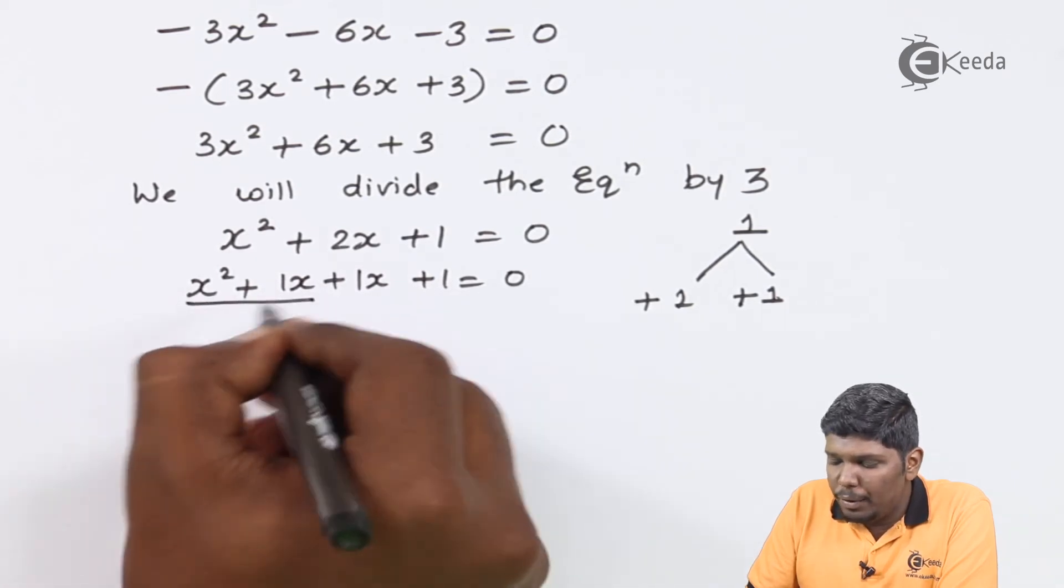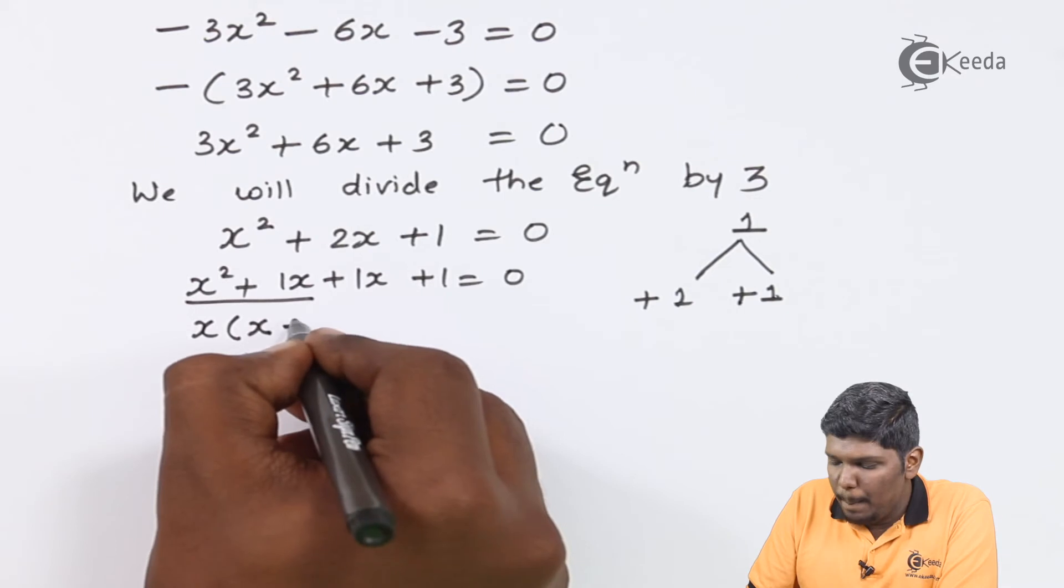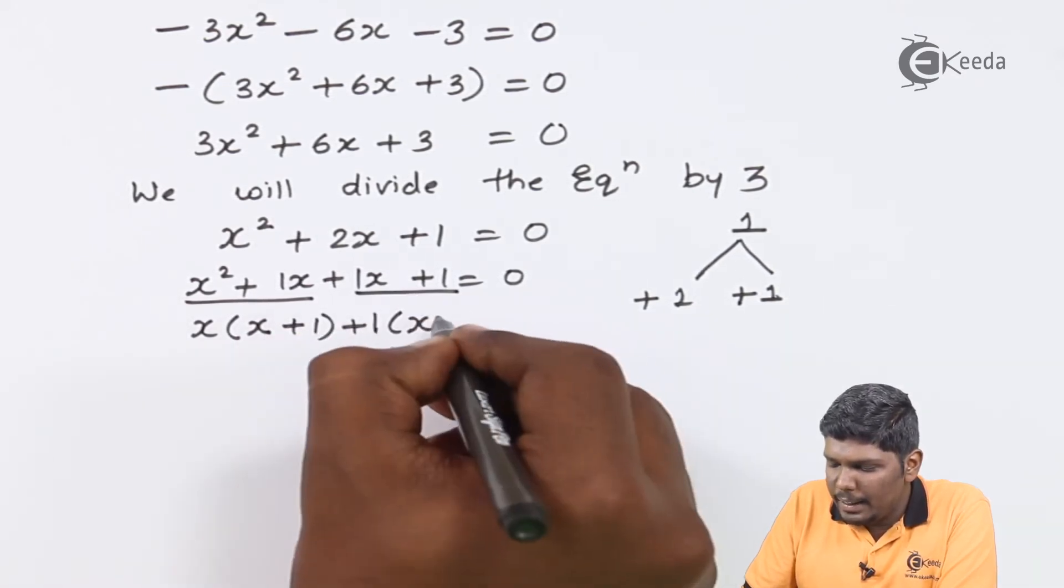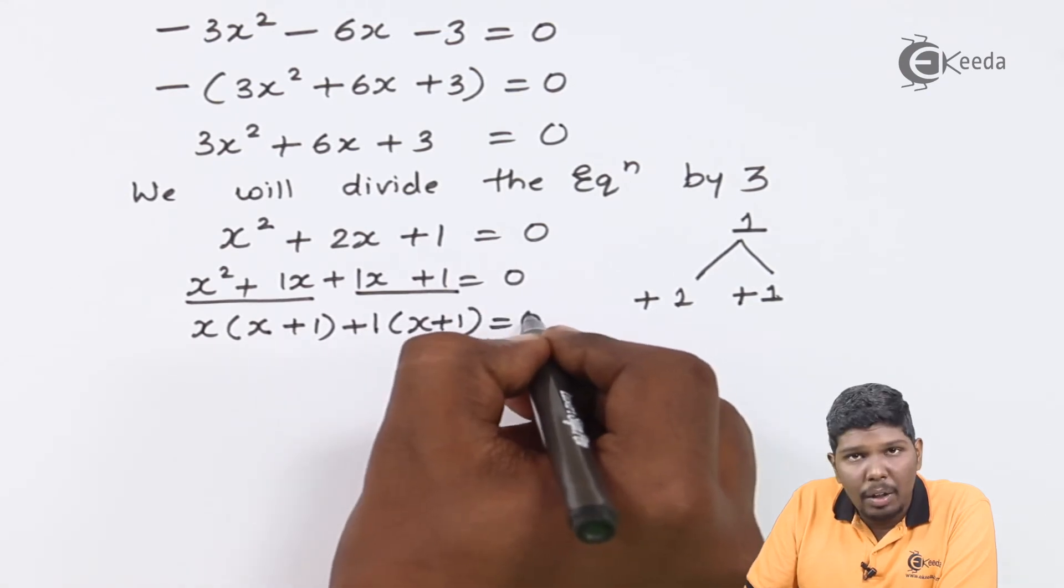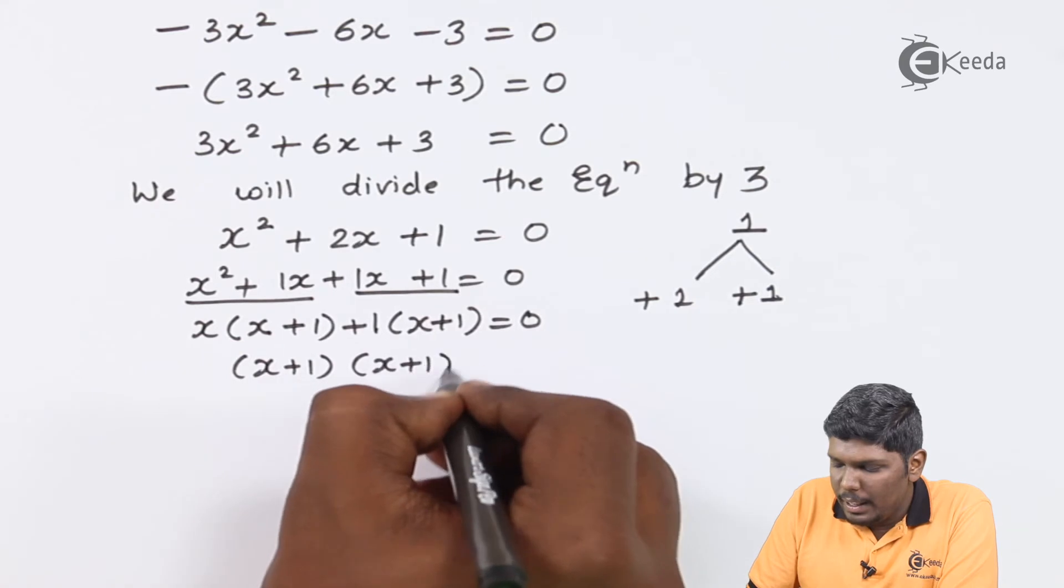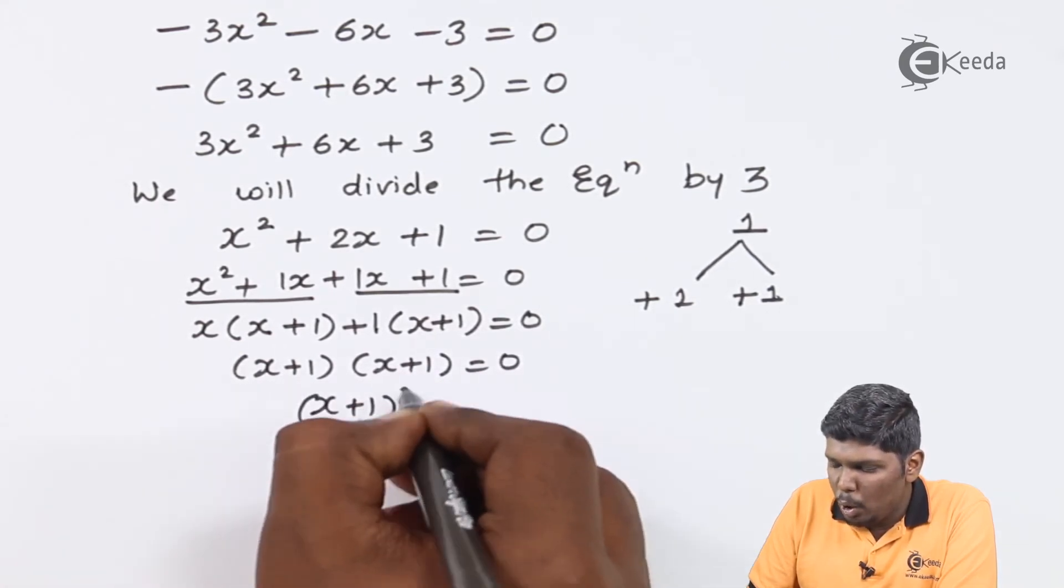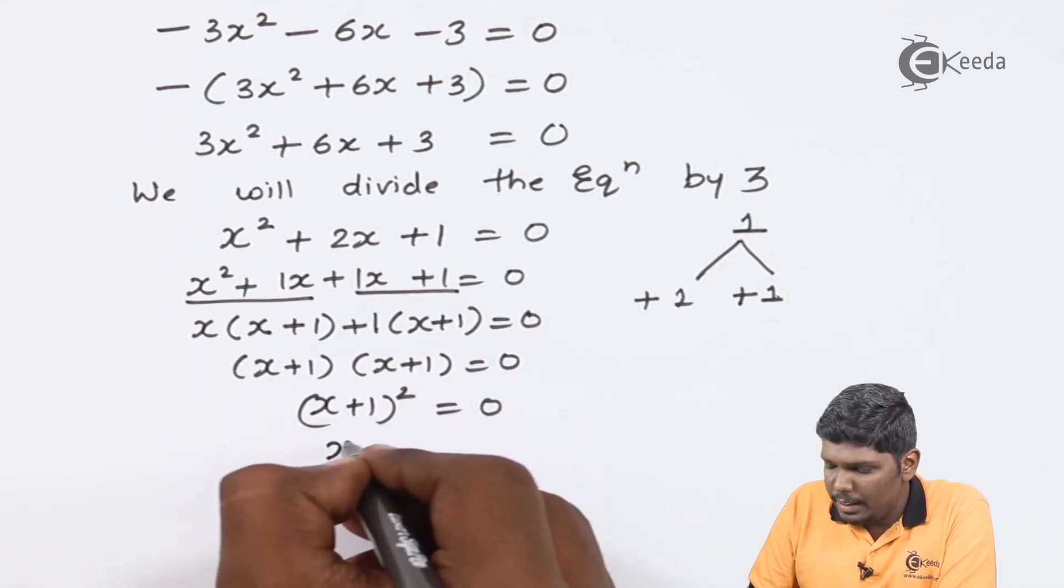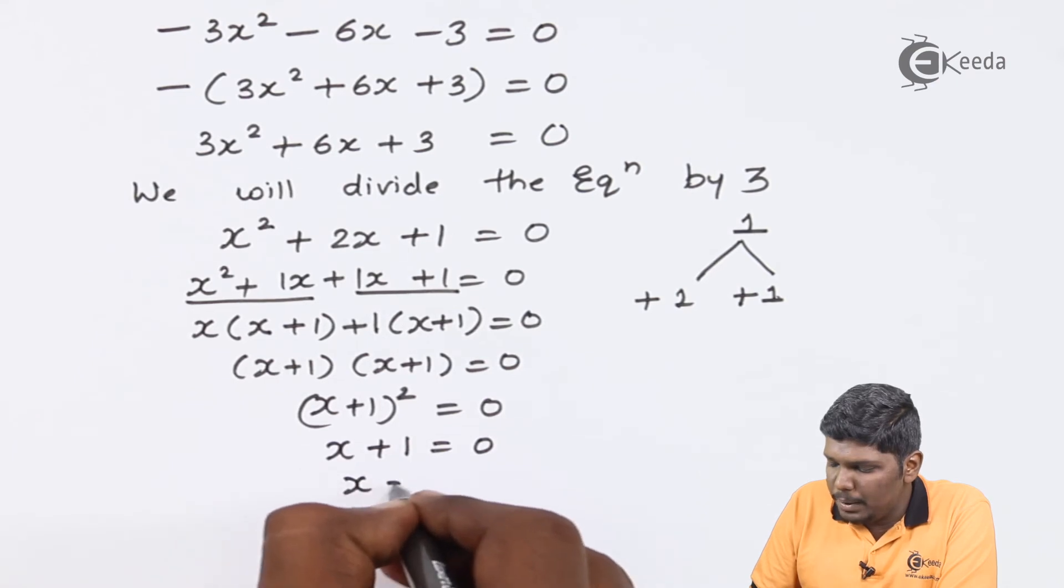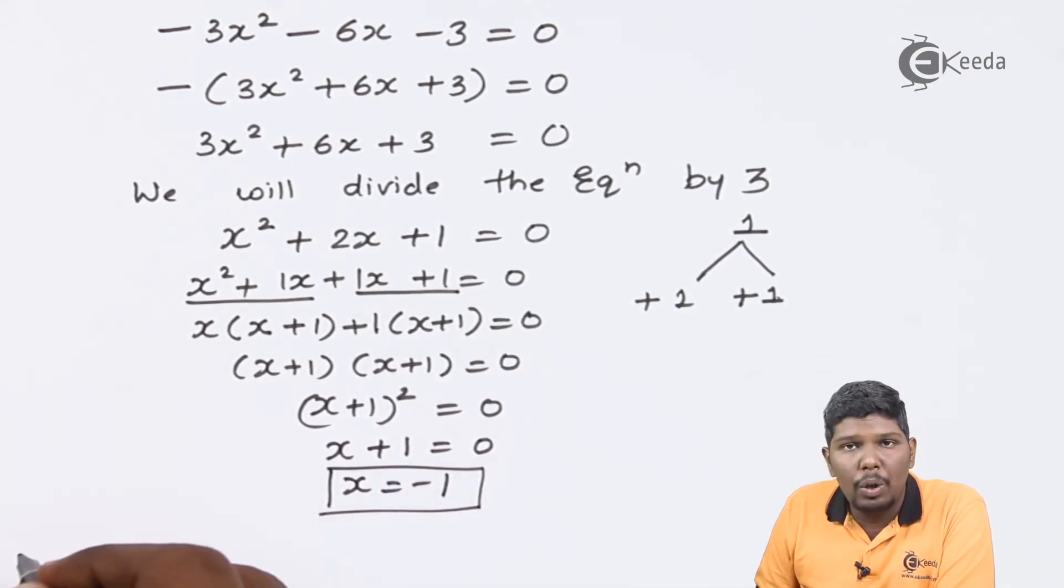If you take common terms in first two, you will get x as common: x(x+1). Again, both this term will have 1 common and the same part, x+1, will be repeated. So (x+1)(x+1) = 0. It means we have (x+1)² = 0. That is, we have x+1 = 0. So x = -1. So the value of x is equal to -1.